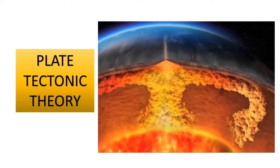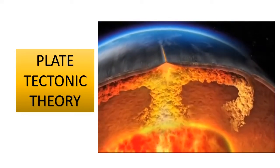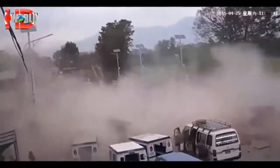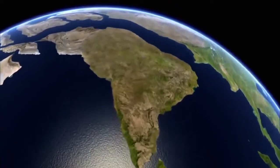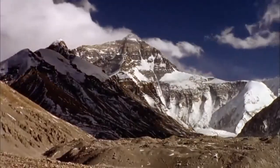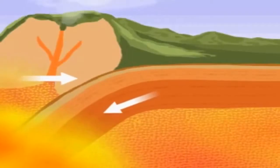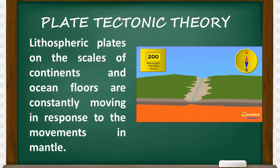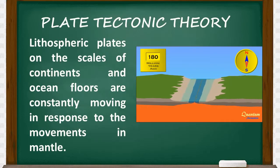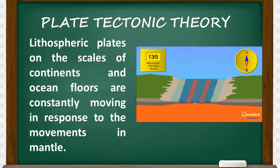In a nutshell, the theory of plate tectonics attributes various events such as earthquakes, volcanoes, mountain building processes, and other related phenomena to the motion and interaction of the plates that compose Earth's lithosphere. It states that lithospheric plates on the scale of continents and ocean floors are constantly moving in response to the movement in the mantle.